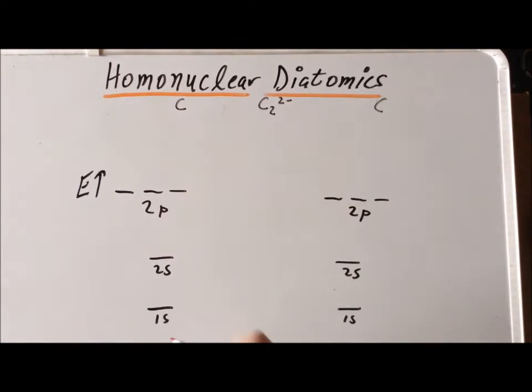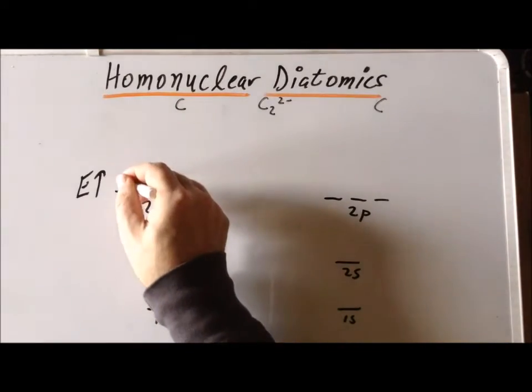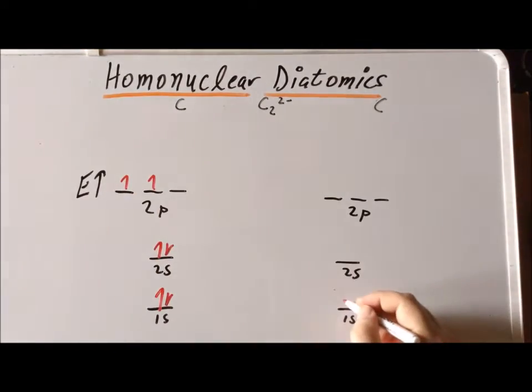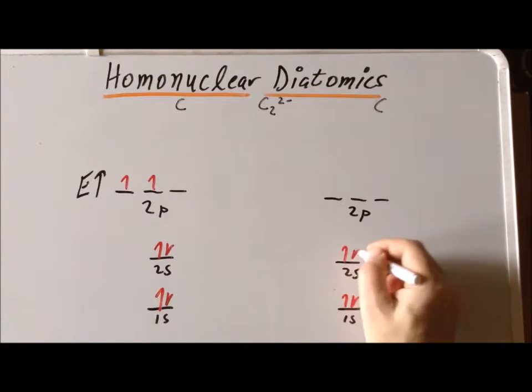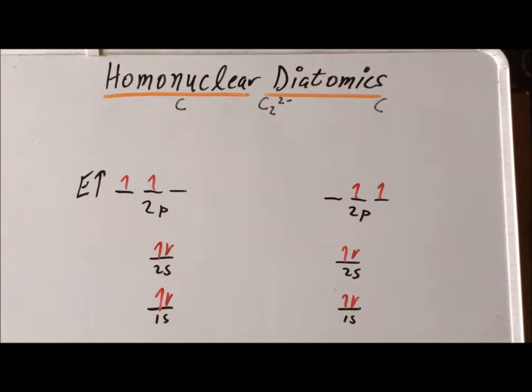Recall that each carbon atom is going to have 6 electrons. So we sketch on each side of the board the atomic orbitals of carbon. Then we need to form the molecular orbitals that are formed by the overlap of the atomic orbitals on the two carbon atoms.